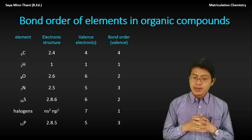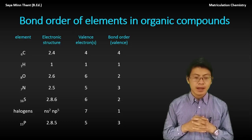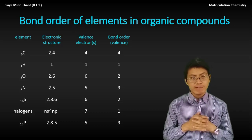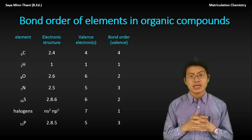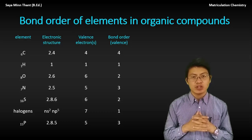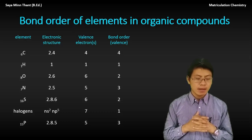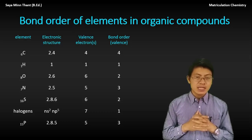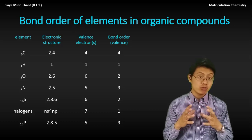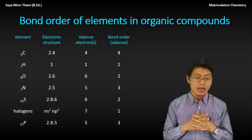The carbon valence group is 4. The hydrogen balance is 1. The oxygen balance is in group 6. Nitrogen is 3. The hydrogen balance is 3.